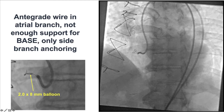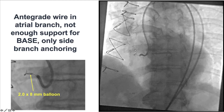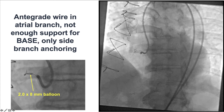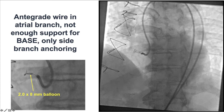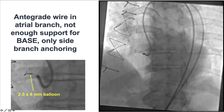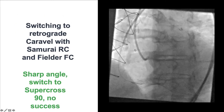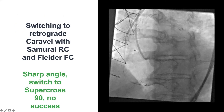We initially tried briefly with antegrade crossing; however, we were unable to cross. The wire kept entering into the small branch, and therefore we decided to switch to the retrograde approach.